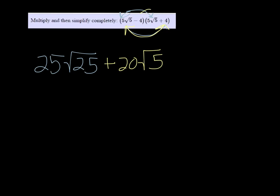Then the inner terms, negative 4, or negative 20, rather, root 5, negative 4 times 5. And then the last would be negative 16, the 4 times negative 4.